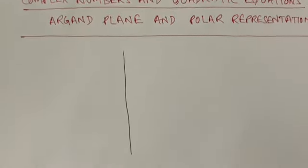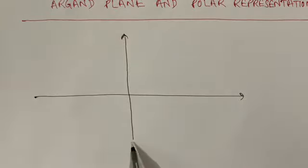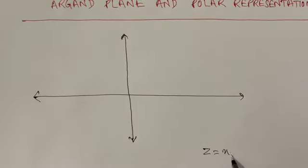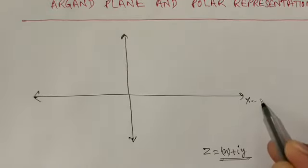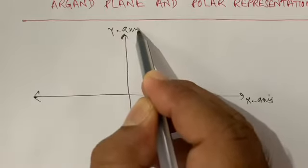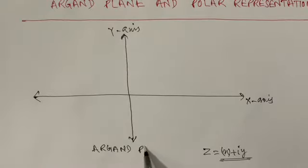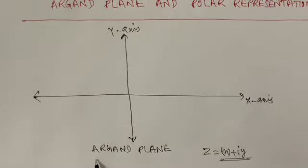To understand the Argand plane, what we do is we make a coordinate axis. The Argand plane is made from the coordinate axis. If we have z = x + iota·y, this is the standard form of a complex number. The real axis we represent on the x-axis, and the imaginary axis we represent on the y-axis. The plane that is formed is called the Argand plane.